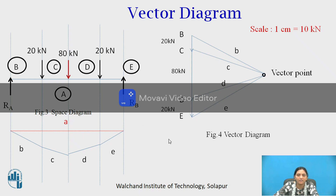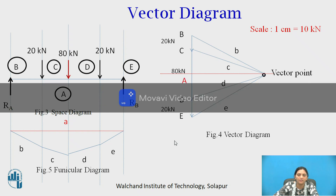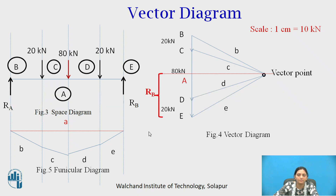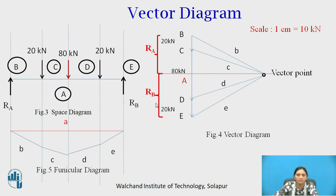Represent Line A in the vector diagram by drawing a line parallel to Line A passing through the vector point. It will intersect the line BE at a point, call it point A. Measure the length EA — this represents RB, the vertically upward support reaction. Measure the length AB — this represents RA, the vertically upward support reaction. Measure EA and AB in centimeters, then convert using the scale to get RB and RA in kilonewtons.